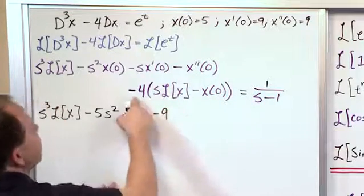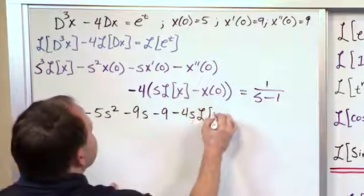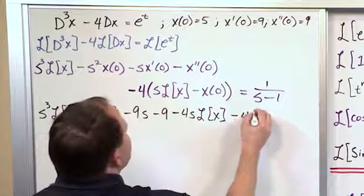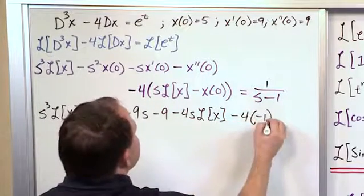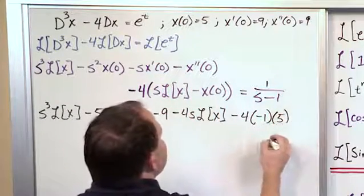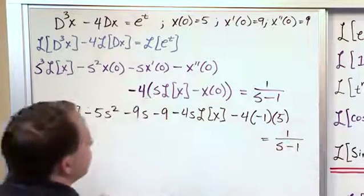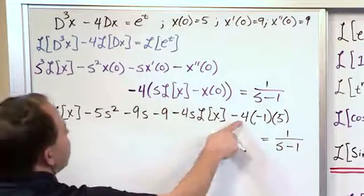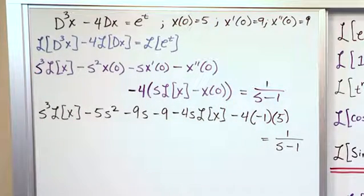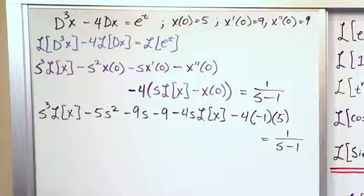Here we're going to distribute the 4 in, so negative 4s Laplace of x. Here we'll distribute this negative 4 in, so it would be negative 4 times negative 1 times x of 0, which is 5. And then I have to put this here so I don't cram myself, s minus 1. So the negative 4 goes here, the negative 1 is here, and then this is just what we're substituting in. I could do some of this math in my head, but I like showing exactly what's going on.